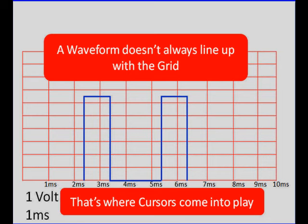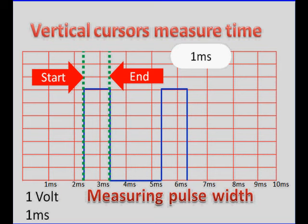Cursors are dotted lines we can put on the screen by freezing the patterns and moving them around. Let's show you a couple of these cursors. These are vertical cursors going across like the vertical lines that measure time. We put one cursor at the start of the measurement and one at the end and the scope tells us the time.